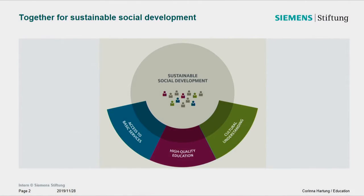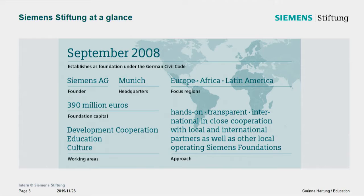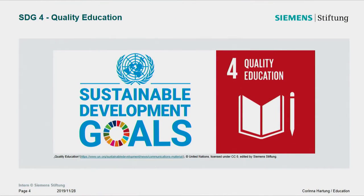Siemens Stiftung is an independent foundation active in three areas: development cooperation, culture, and education. It was established 11 years ago, headquartered in Munich, Germany, with a regional office in Santiago de Chile starting this year. We are active in three focus regions: Africa, Latin America, and Germany. Our commitment is based on the 17 UN Sustainable Development Goals. High-quality, freely accessible education is a basic requirement for development and prosperity, and we focus on STEM education in primary and secondary schools.